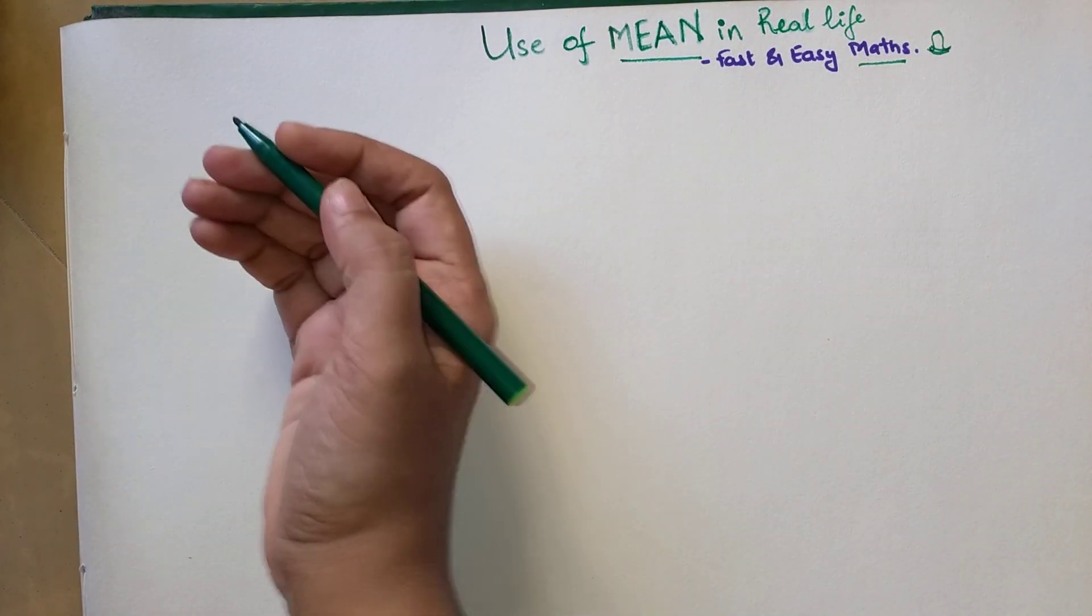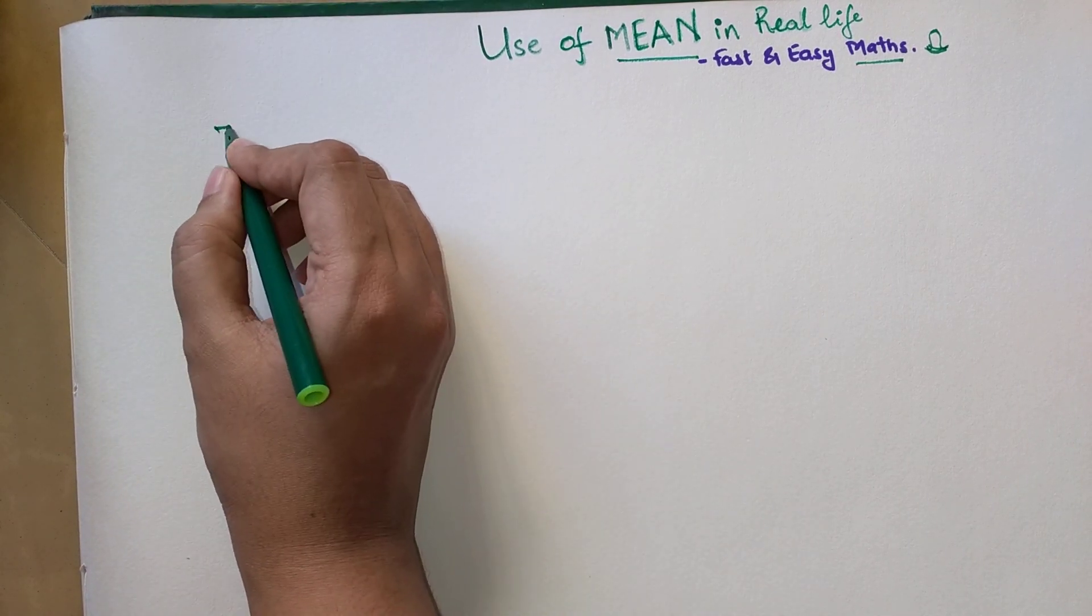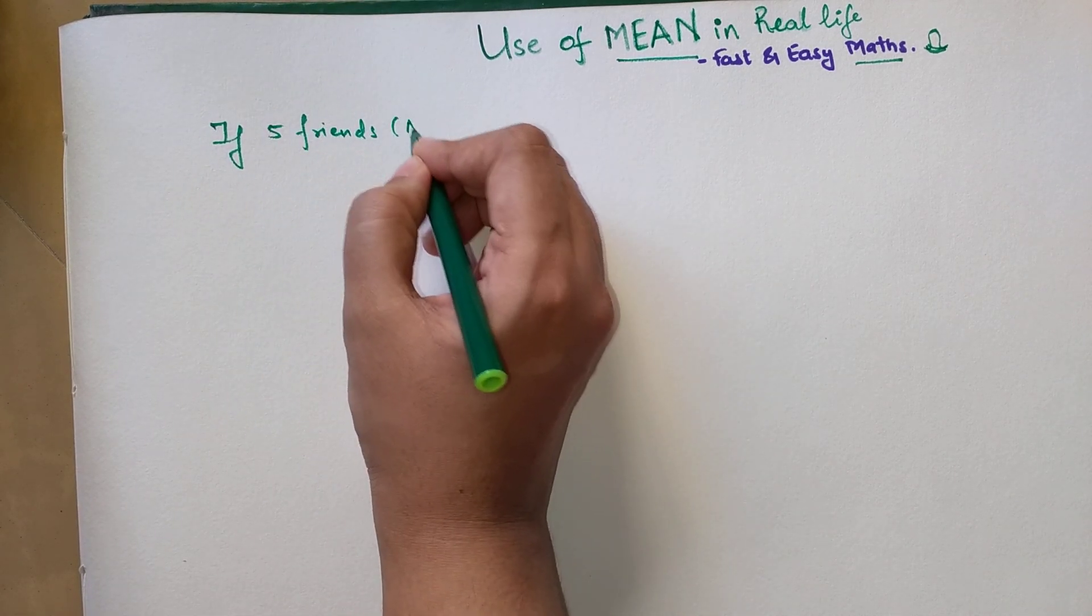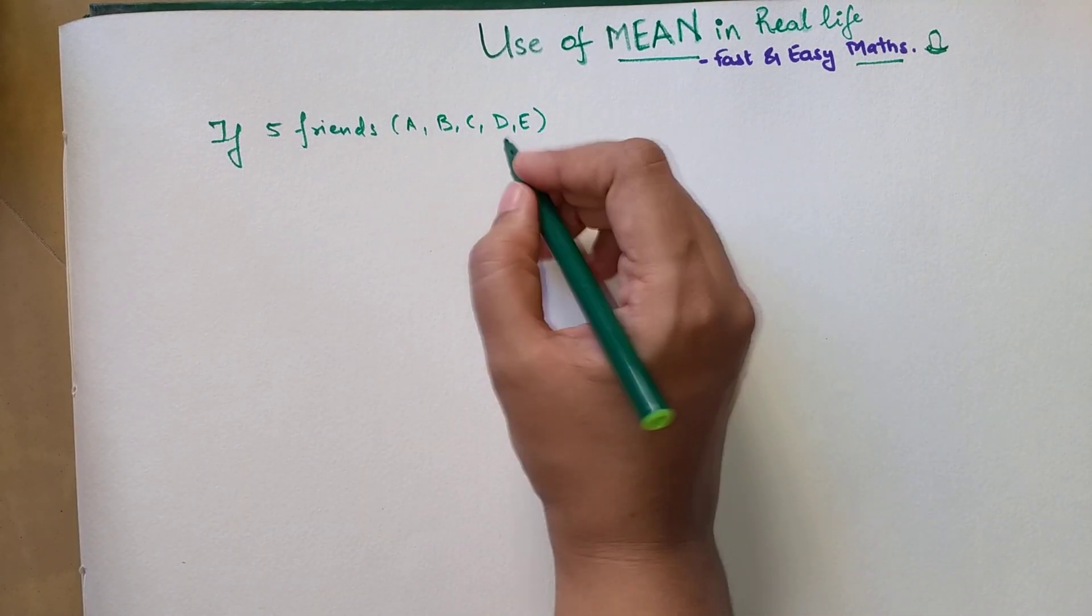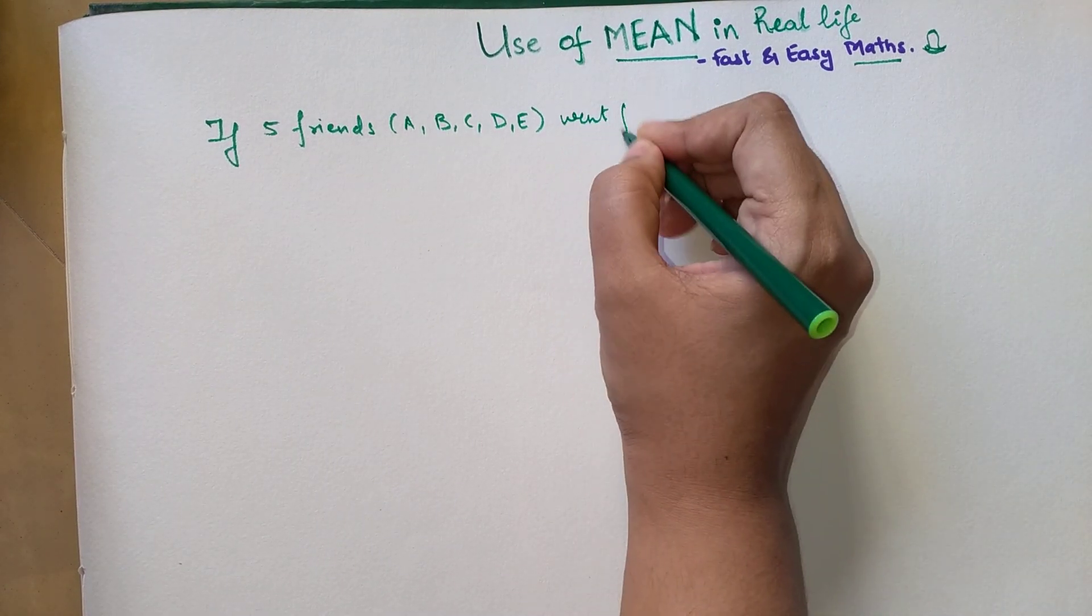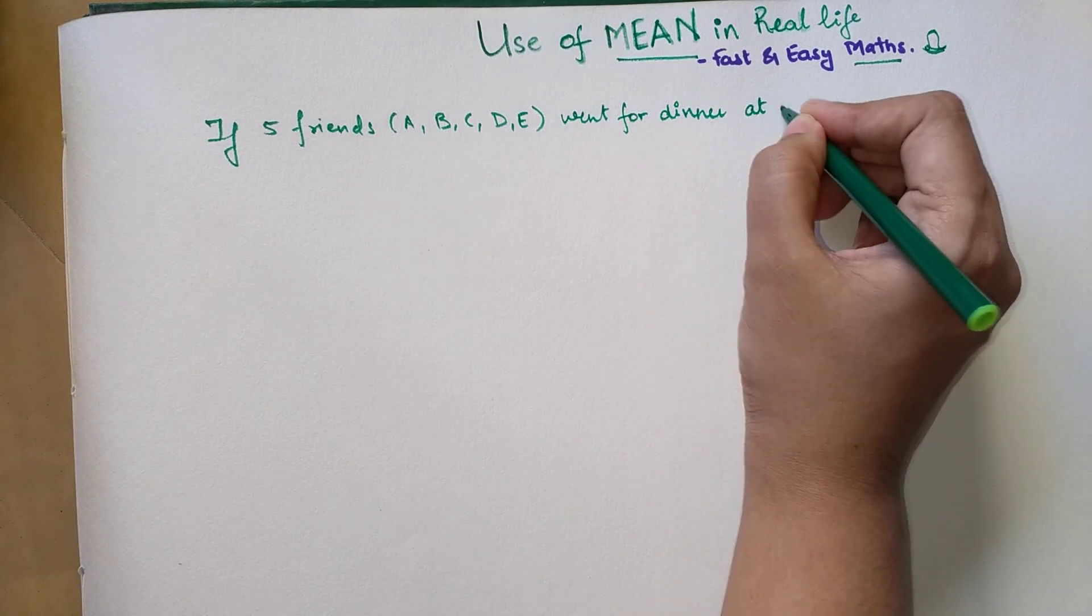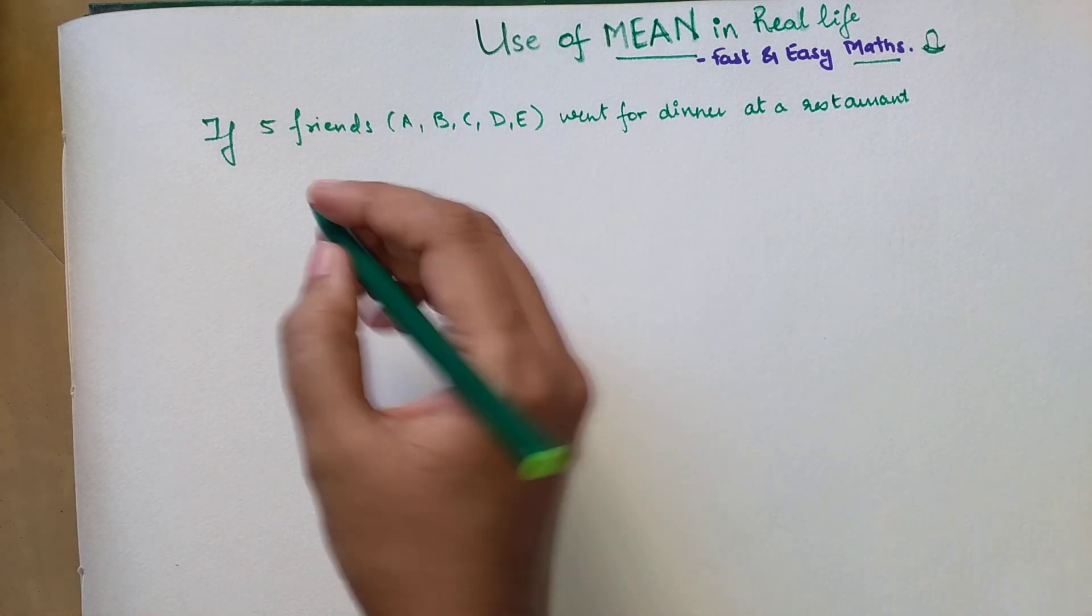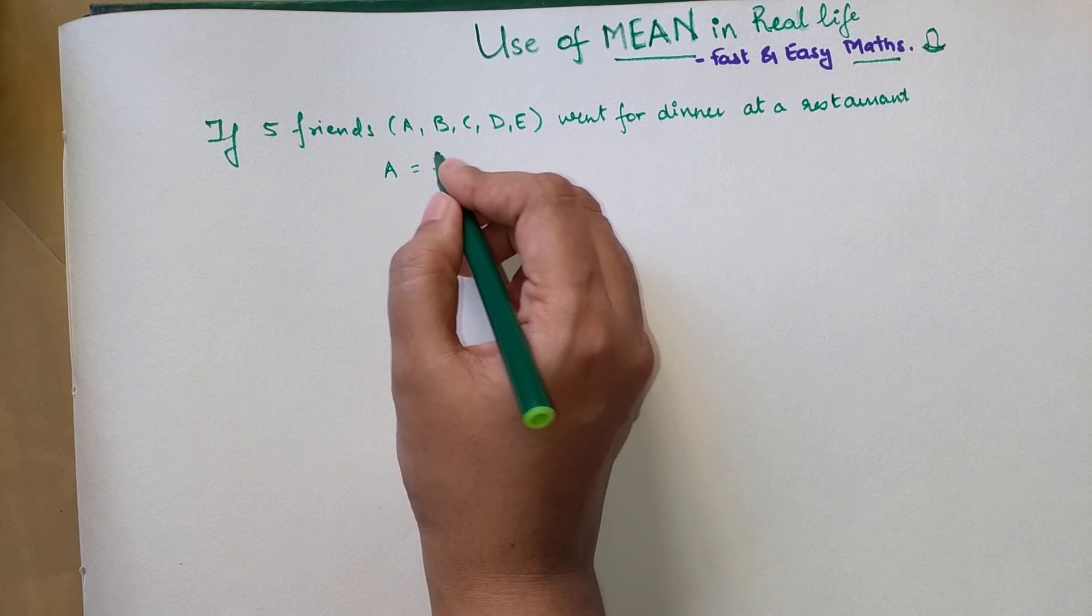Now let's see the example. If five friends - we can name them A, B, C, D, and E - went for dinner at a restaurant.